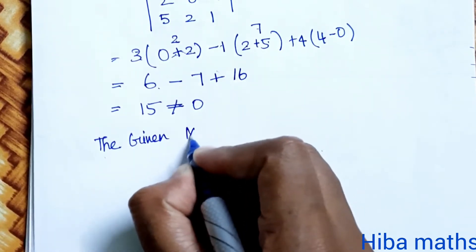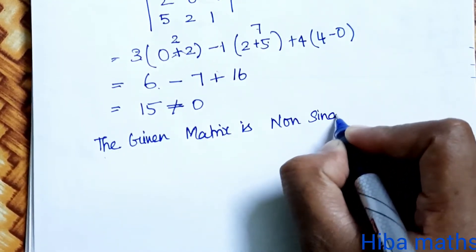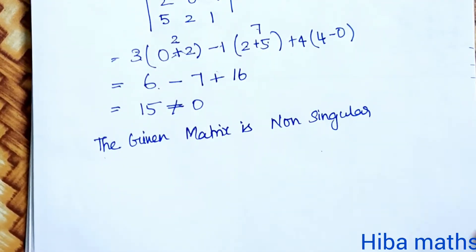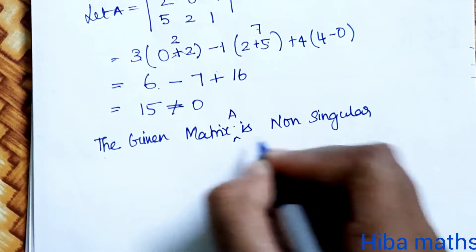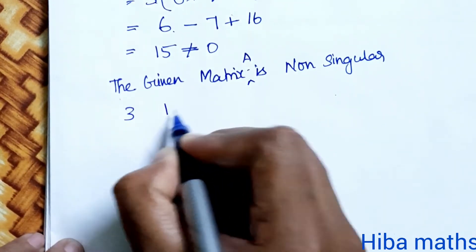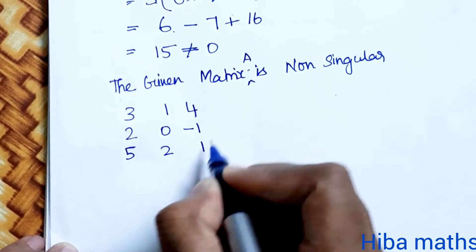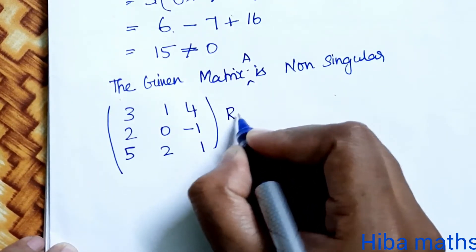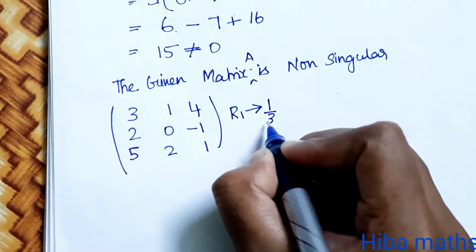The given matrix is non-singular. Now we will perform elementary row transformations to reduce this matrix to the identity matrix. We start by changing row 1.